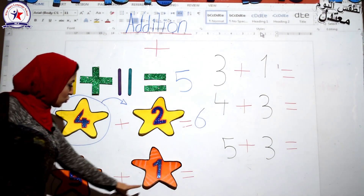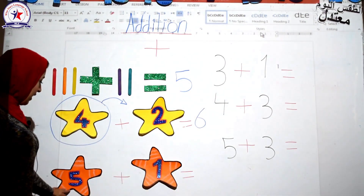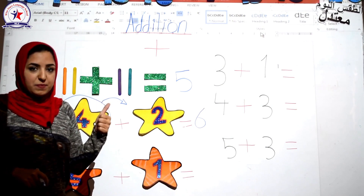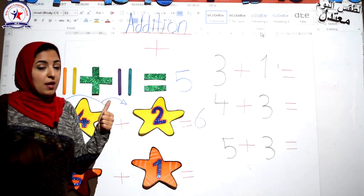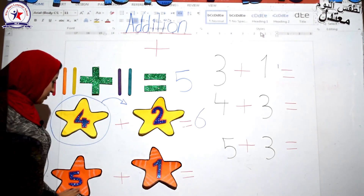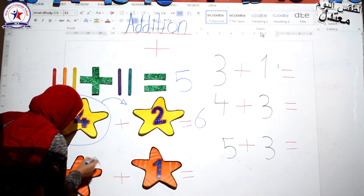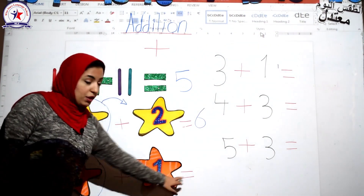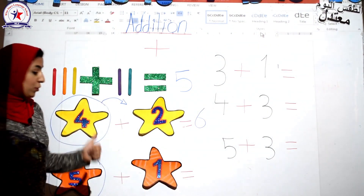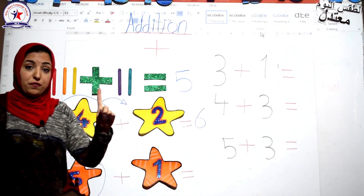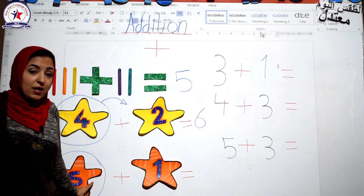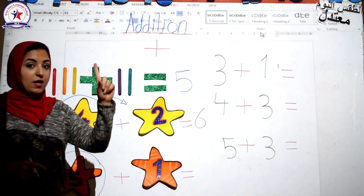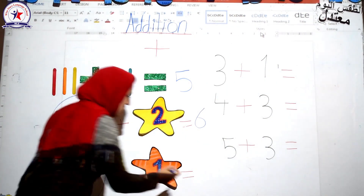Five plus one equal what? Circle the bigger number. Answer steps: first, circle the bigger number. Which one is bigger, five or one? Of course, five. Five plus one equal what? Put the bigger in your head and put the smaller on your fingers. Count after the number on your head — after five: six. Excellent.